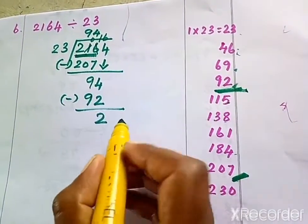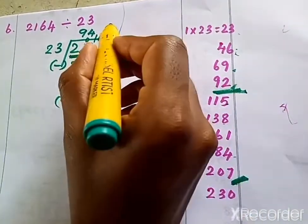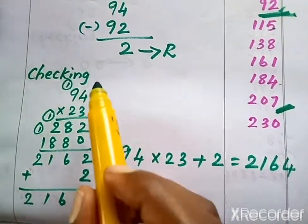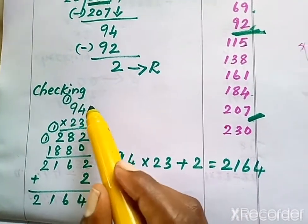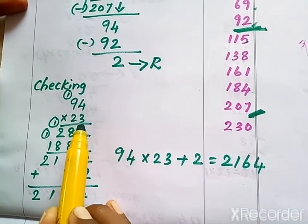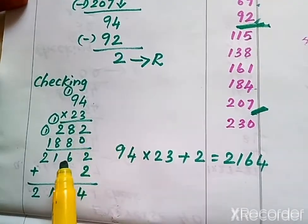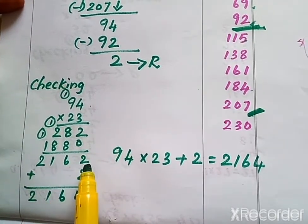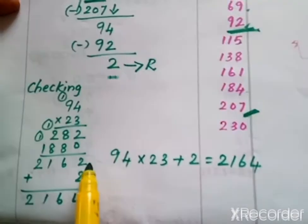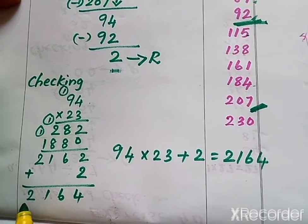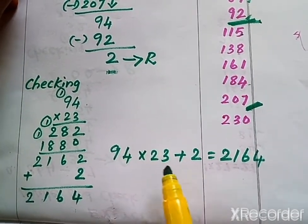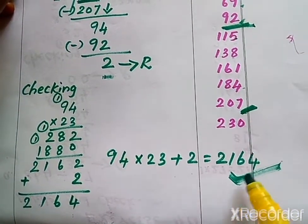We stop our division here. The remainder is 2 and the quotient is 94. To check, we multiply the quotient by the divisor: 94 times 23 gives 2,162. Then we add the remainder 2 to get 2,164. So: quotient × divisor + remainder = dividend. Our division is correct.